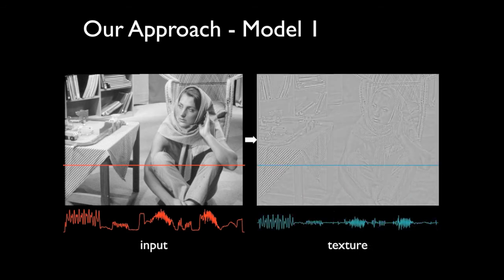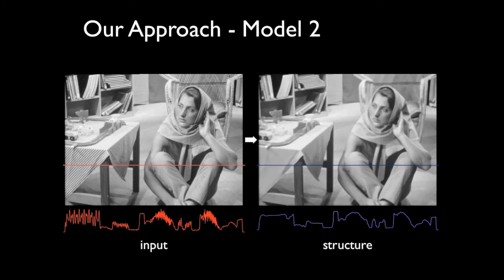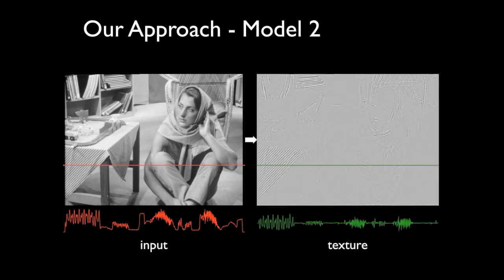Likewise, the texture layer is devoid of any structural data and contains only the high-frequency image components. Our second model, like the first one, is very successful at separating texture from structure. In fact, for this specific example, it performs slightly better.